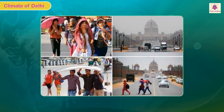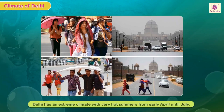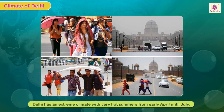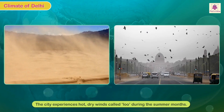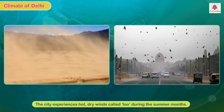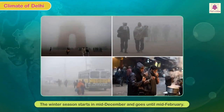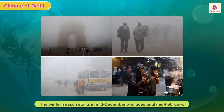Delhi has an extreme climate with very hot summers from early April until July. The city experiences hot dry winds called 'loo' during the summer months. The winter season starts in mid-December and goes until mid-February, and is extremely cold.